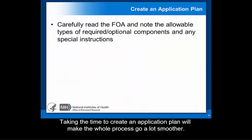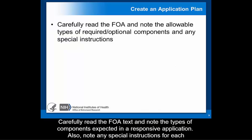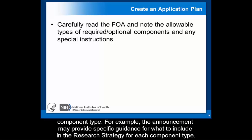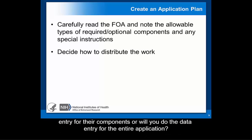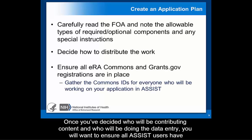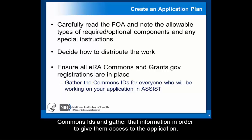Taking the time to create an application plan will make the whole process go a lot smoother. Carefully read the FOA text and note the types of components expected in a responsive application, as well as any special instructions for each component type. For example, the announcement may provide specific guidance for what to include in the research strategy for each component type. Decide how you want to distribute the workload — if you have collaborating organizations, will they be responsible for the data entry for their components, or will you do the data entry for the entire application? Once you've decided who will be contributing content and doing the data entry, ensure all ASSIST users have Commons IDs and gather that information in order to give them access to the application.